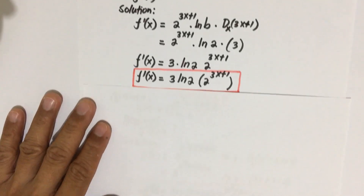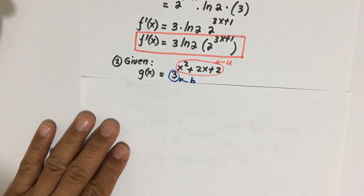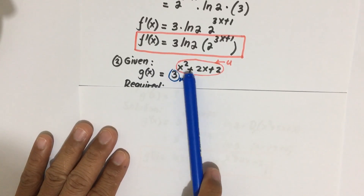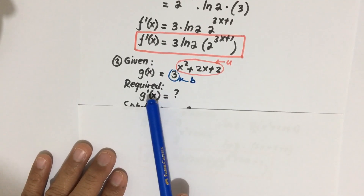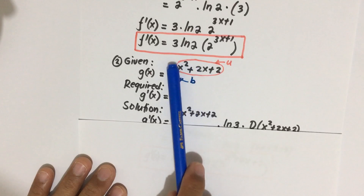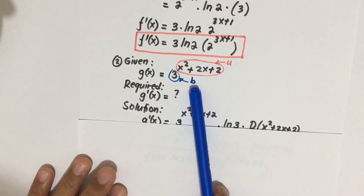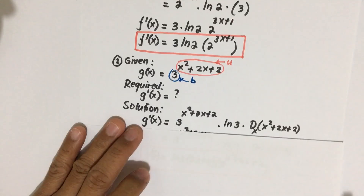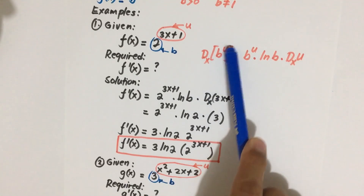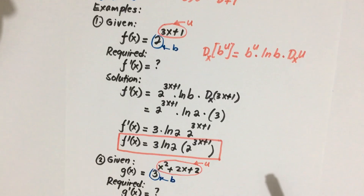For the second example, I thought it was recorded but it wasn't, so I will just show you the solution. We are given g(x) equal to 3 to the x squared plus 2x plus 2, and we are required to solve for g'(x). This is in the form of b to the u, so using the formula: the derivative of b to the u with respect to x is equal to b to the u times ln b times the derivative of u with respect to x.